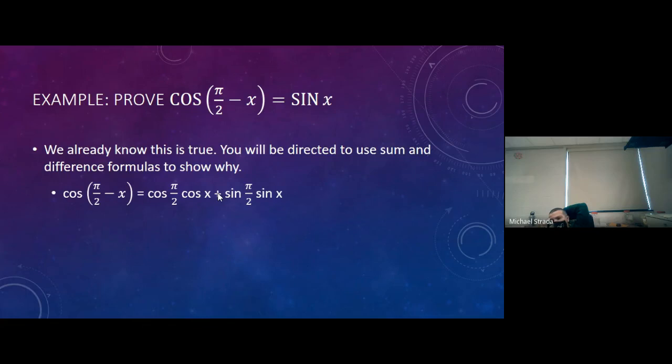So in other words, what you're showing is the steps to justify that. So in other words, you have to remember the cosine of π over 2 is 0. You have to remember that the sine of π over 2 is 1.